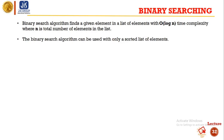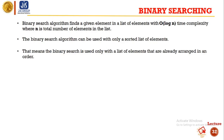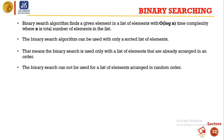The binary search algorithm can be used only with a sorted list of elements. That means binary search is used only with a list of elements that are already arranged in order. The binary search cannot be used for a list of elements arranged in a random order.